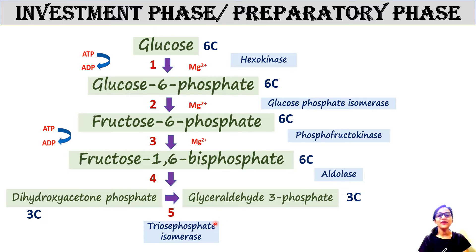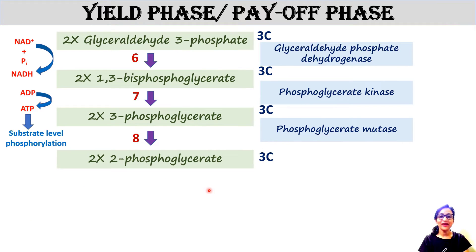So from one molecule of glucose, two molecules of glyceraldehyde-3-phosphate are generated. The next phase is the yield phase. Since one molecule of glucose produces two molecules of glyceraldehyde-3-phosphate, each reaction in the yield phase occurs twice per glucose molecule — that is why there is a 2x in all steps.